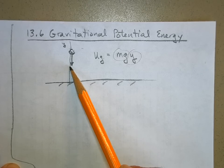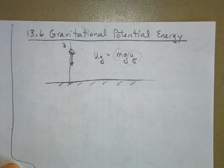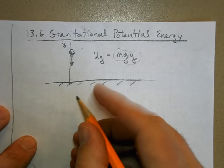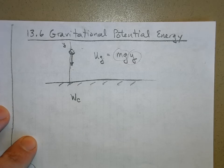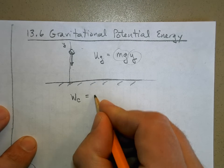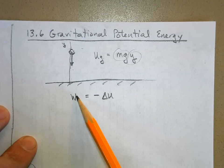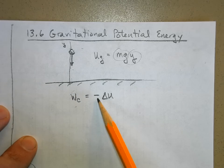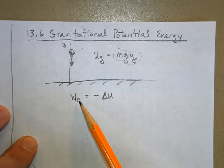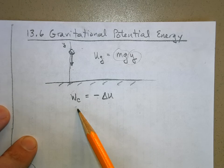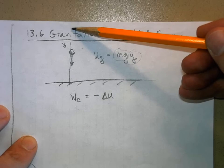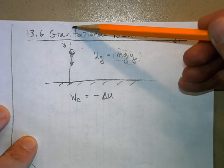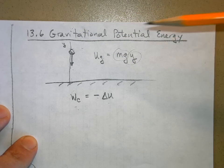If I lower the rock, I decrease its potential energy. We said this in a general way: the work done by a conservative force — we have two so far, springs and gravity — equals a loss of potential energy. If the work done by a conservative force is positive, we've lost potential energy. If it's negative, we've gained potential energy. If I lift the rock up, gravity does negative work and I increase my potential energy.